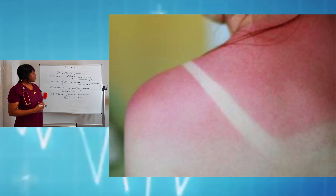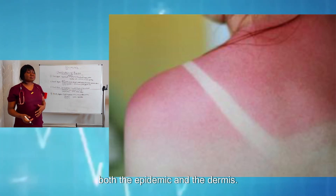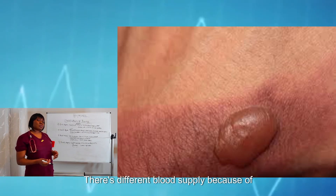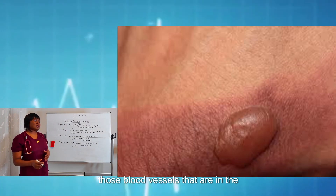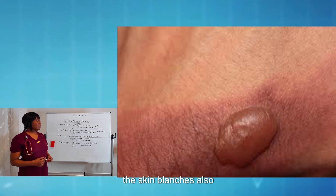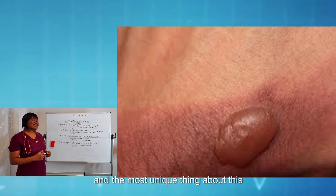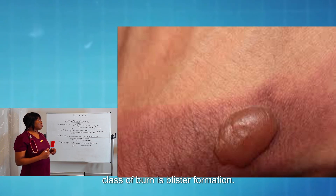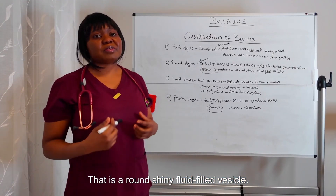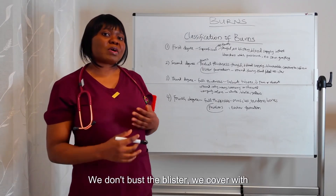Second degree is also called partial thickness burn. This affects both the epidermis and the dermis. This burn is painful, there is decreased blood supply because of those blood vessels that are in the dermis. The skin blanches also and it is sensitive to cold air. The most unique thing about this class of burn is blister formation — that is a round, shiny, fluid-filled vesicle. We don't burst the blister; we cover it with sterile gauze.